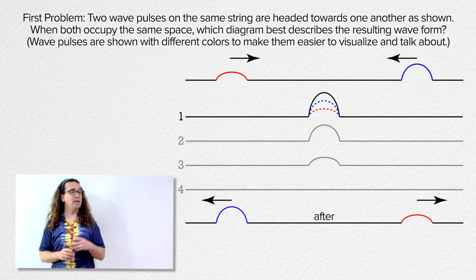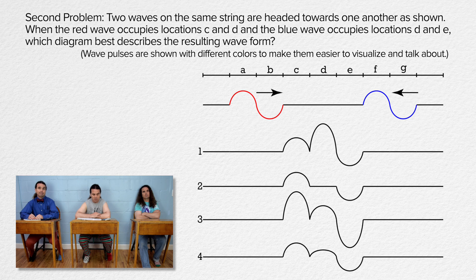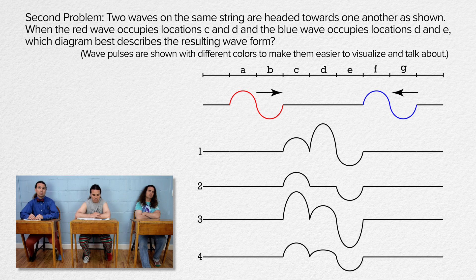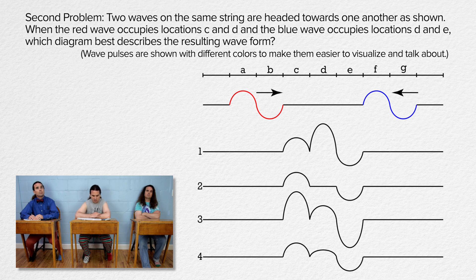Bobby, could you please read and Billy, could you please answer the second problem? Two waves on the same string are headed towards one another as shown. When the red wave occupies locations C and D and the blue wave occupies locations D and E, which diagram best describes the resulting wave form? Wave pulses are shown with different colors to make them easier to visualize and talk about again.